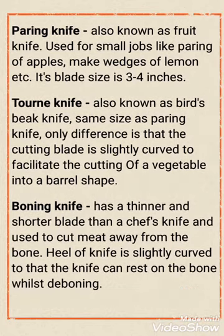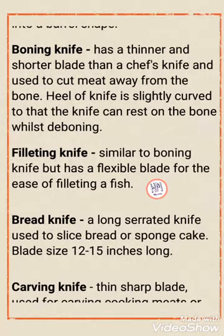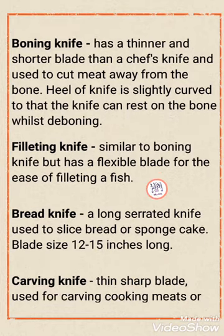Next one is the boning knife. The boning knife has a thinner and shorter blade than a chef knife and is used to cut meat away from the bone, separating the bone from the meat. The heel of the knife is slightly curved so that the knife can rest on the bone while deboning, giving you a better grip.